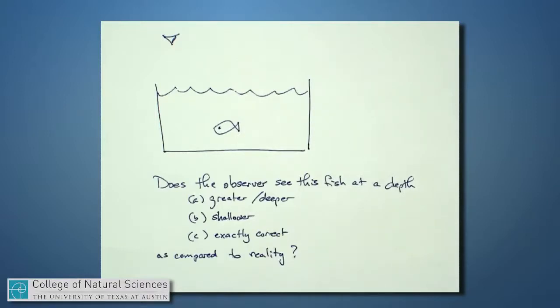In other words, if the fish is really 10 centimeters below the surface of the water, does your eye perceive that depth to be exactly right, or do you think the fish is at a depth that's even bigger compared to the actual depth, or do you perceive that the fish is at a depth even shallower than the actual depth?